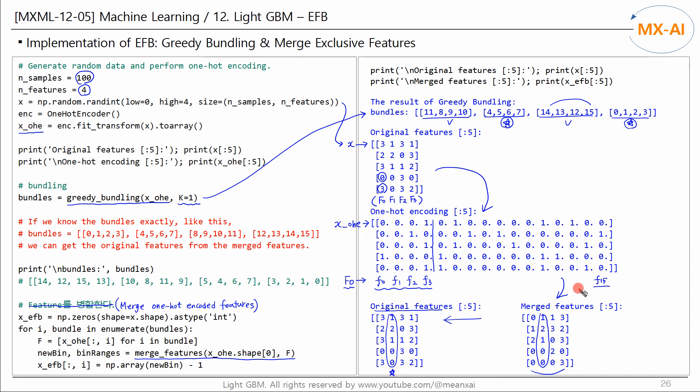And the fourth feature is also correctly restored to its original feature. If bundled correctly, you can get the original features from the one-hot encoded features.